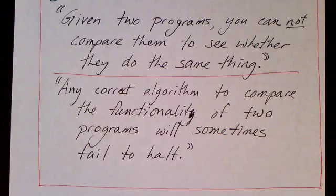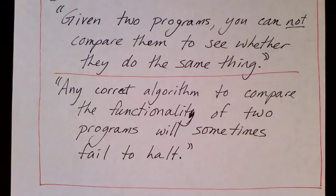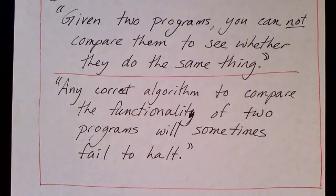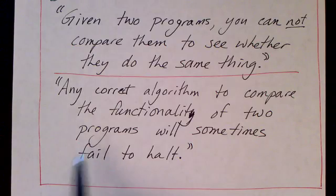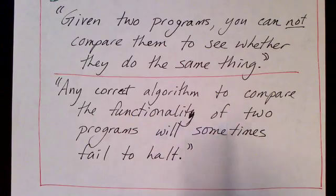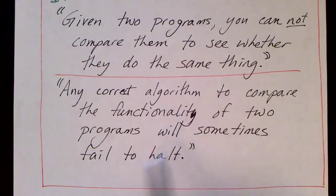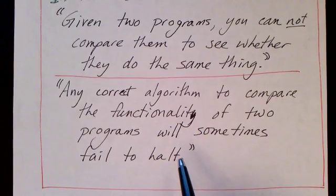In some cases you may be able to quickly determine that two programs are different, and in some cases you may be able to prove that they really are the same. For example, if you're given two Turing machines and their descriptions are character by character identical, then clearly they're going to accept the same language. But in general, you cannot come up with an algorithm that will compare the functionality of two programs. If you do come up with such an algorithm, it will not always halt — so therefore it's not really an algorithm.